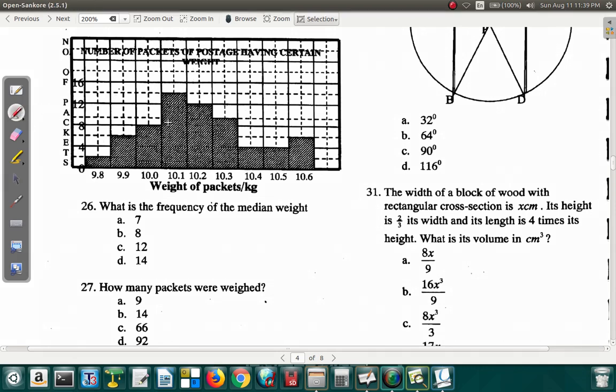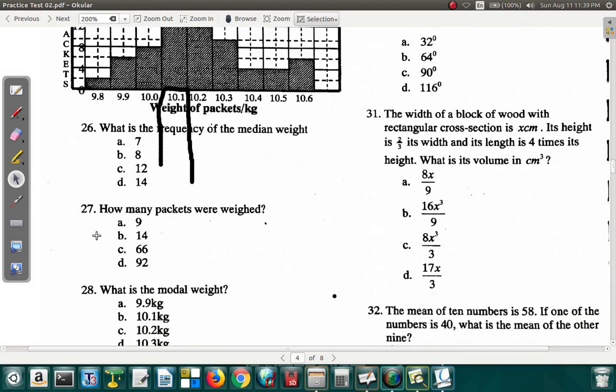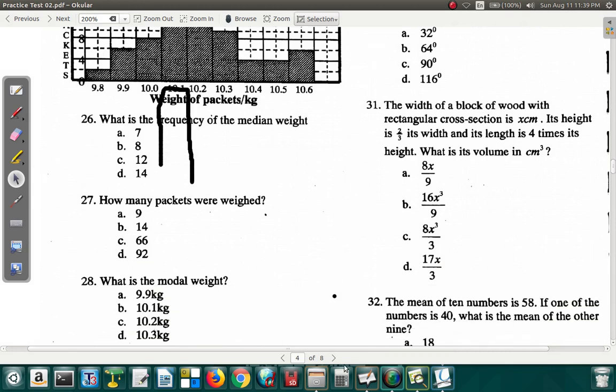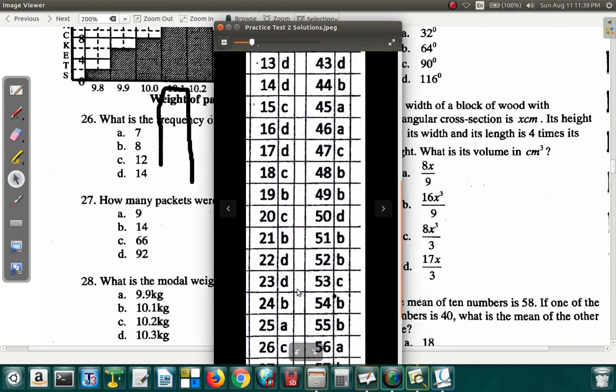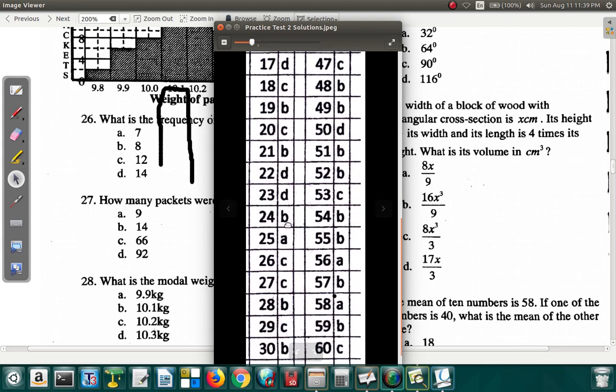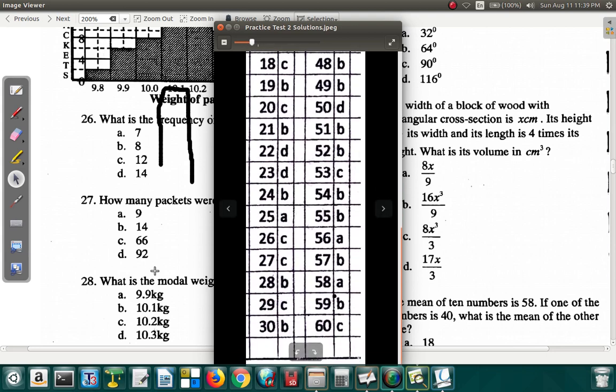It's this here. This one has the highest frequency, 14. Everything else is below 14 in terms of frequency. Now the weight of that is 10.1. So what we have here is 10.1, which is B. Question 28 is B. Question 27 we got A 66, which is C.